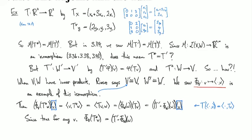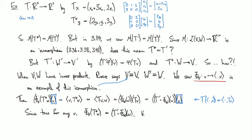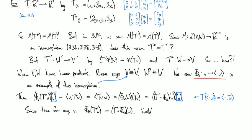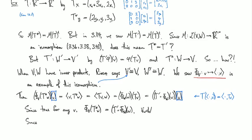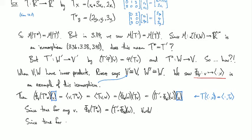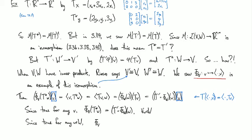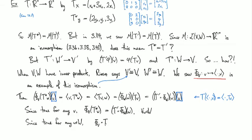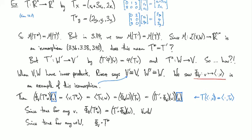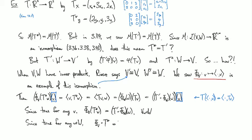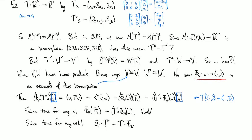And so, now this is true all through, across w, and so, since true for any w, we have phi v composed with t star is equal to t prime composed phi w.